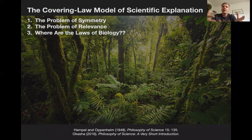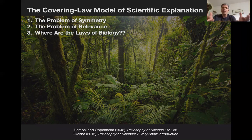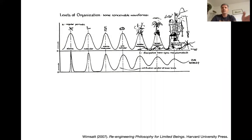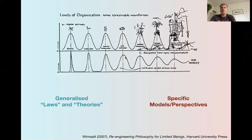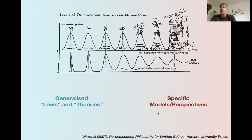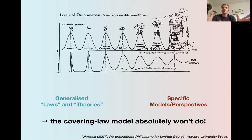Then of course we come back to Wimsatt's rainforest ontology. Where are these general laws in biology? Natural selection maybe — but usually you don't have general laws to derive models from if you're a biologist. Even worse in the social sciences: we live in a part of the world that is very messy, where levels of organization are no longer clearly separated and you need multi-level explanations that only apply locally to specific systems. While physicists can have generalized laws, in biology, neuroscience, and the social sciences we can only have specific models relative to specific problems. The covering law model absolutely won't do.